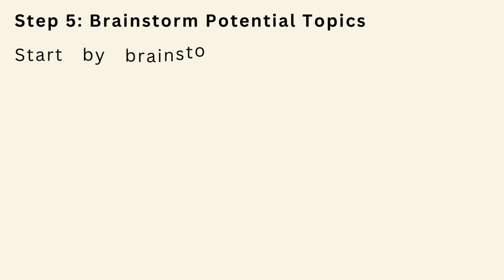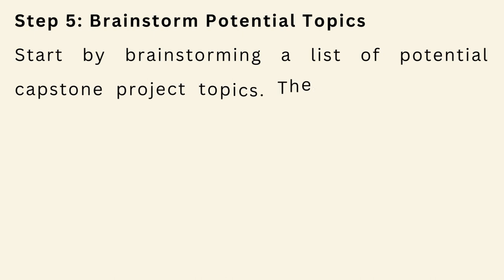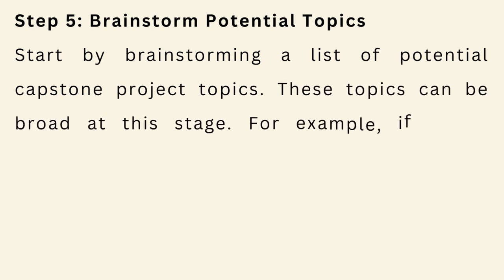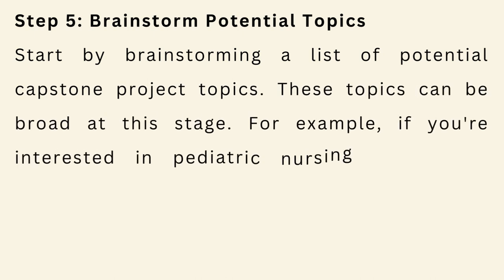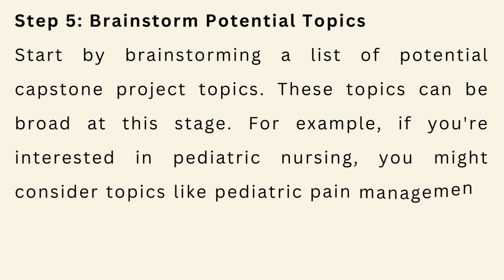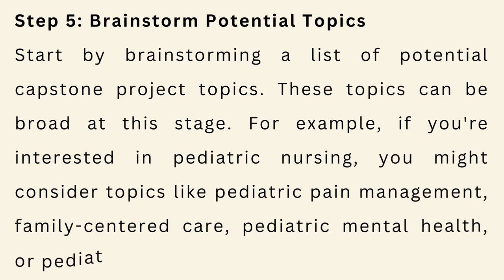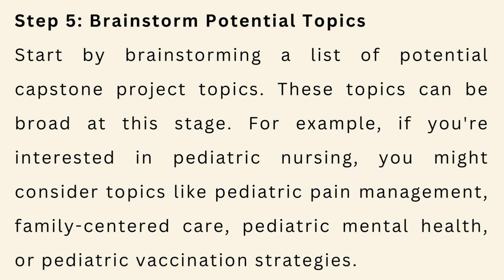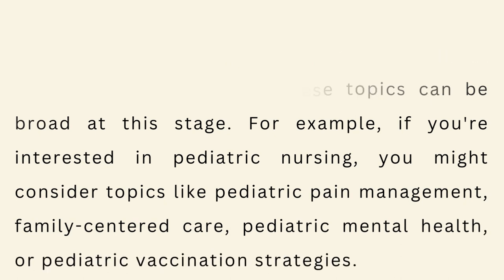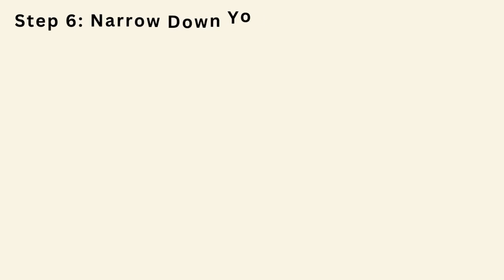Step 5: Brainstorm potential topics. Start by brainstorming a list of potential capstone project topics — these topics can be broad at this stage. For example, if you're interested in pediatric nursing, you might consider topics like pediatric pain management, family-centered care, pediatric mental health, or pediatric vaccination strategies.